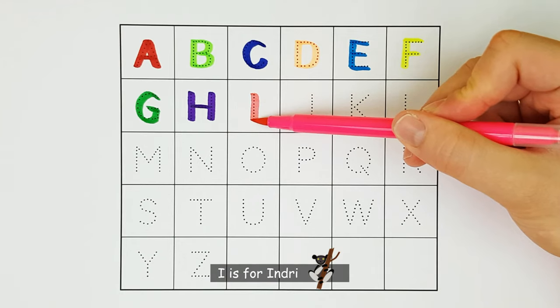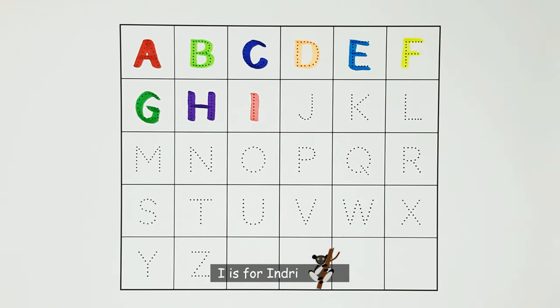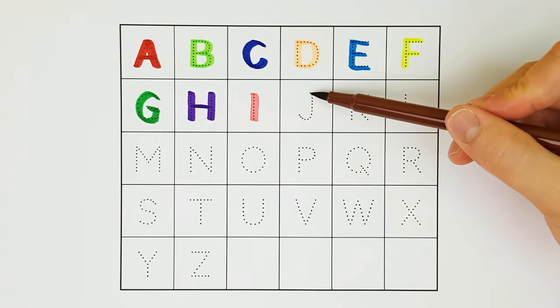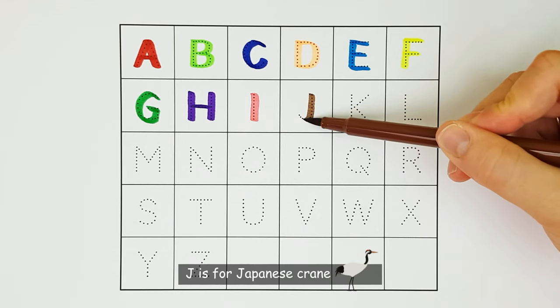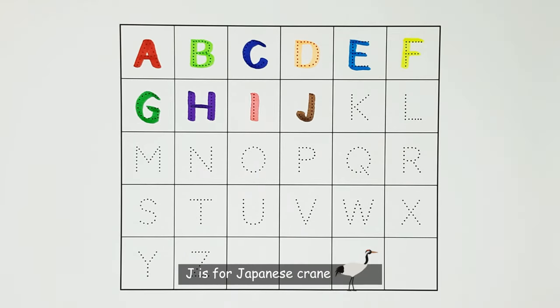I. I is for Iguana. I. J. J is for Japanese Crane. J.